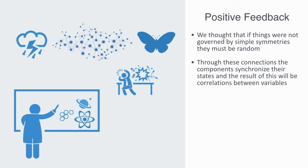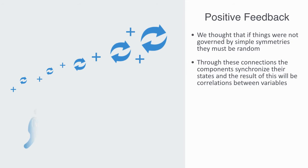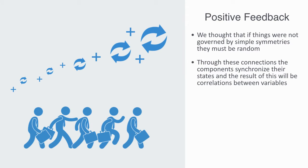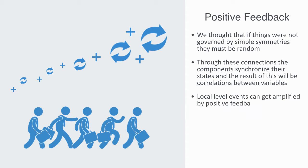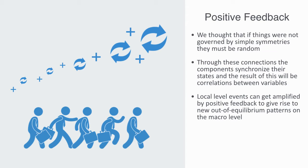Non-equilibrium arises out of the positive links and feedback between the components. Positive feedback loops are reinforcing — they drive the system in one direction over time. Local level events can get amplified by positive feedback to give rise to new, out-of-equilibrium patterns on the macro level.